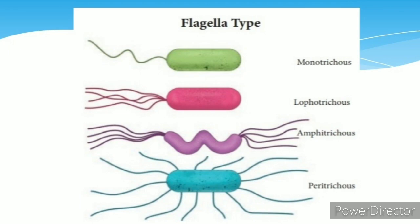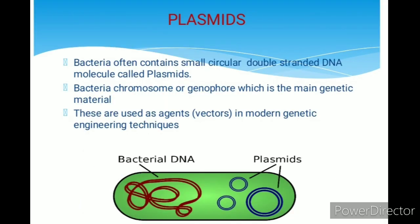Plasmids: bacteria often contain small circular double-stranded DNA molecules called plasmids. These are separate from the bacterial chromosome or genome, which is the main genetic material, and are mainly used as agents or vectors in modern genetic engineering techniques.